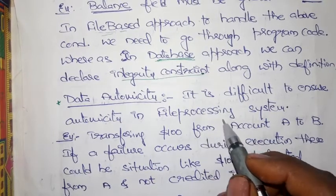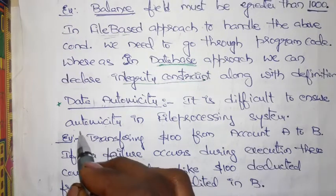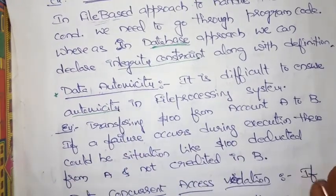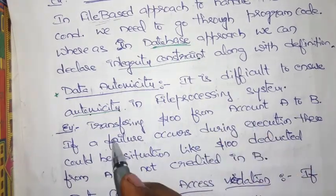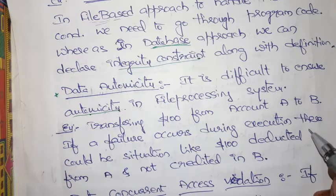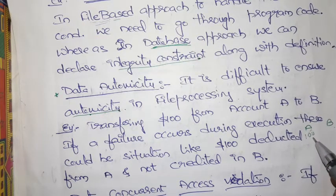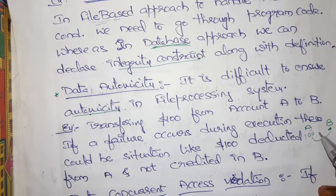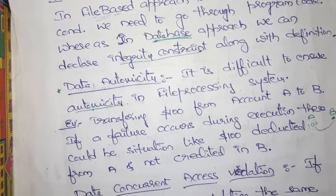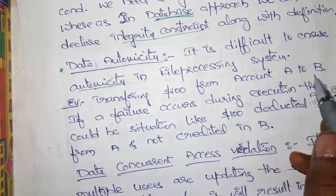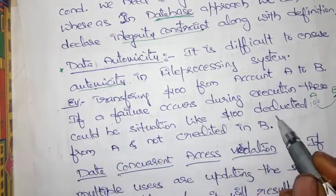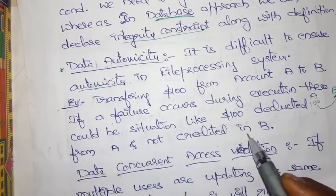The next problem is data atomicity. It is very difficult to maintain atomicity in a file processing system. For example, two accounts A and B — A wants to transfer one hundred rupees to B. From A's account, one hundred rupees is deducted but it is not credited to B's account. If a failure occurs during execution, there could be a situation where money is deducted from A but not credited to B — that is an atomicity problem.